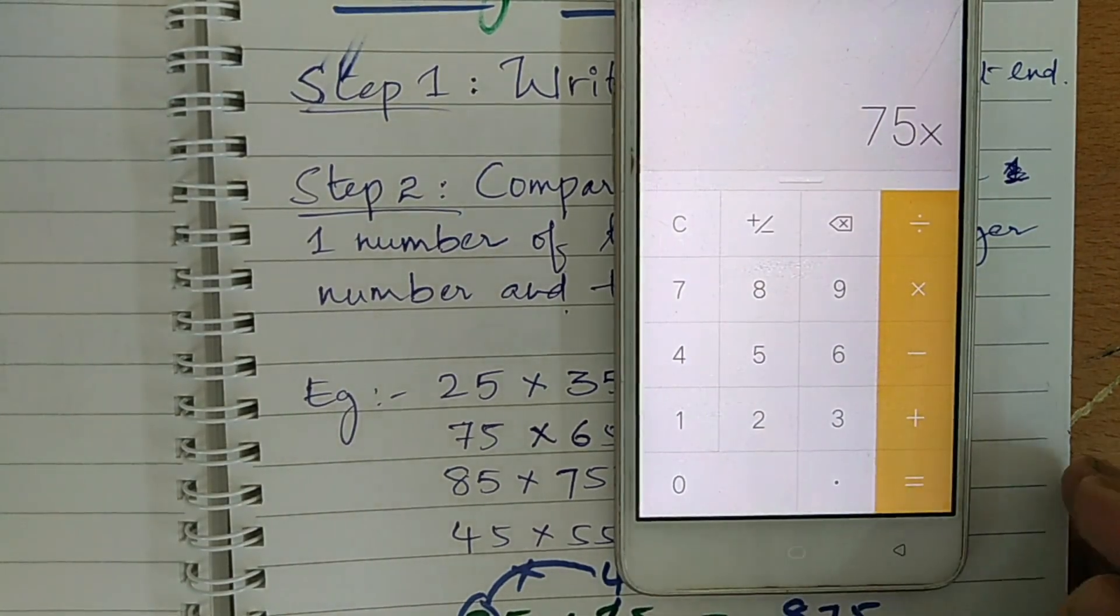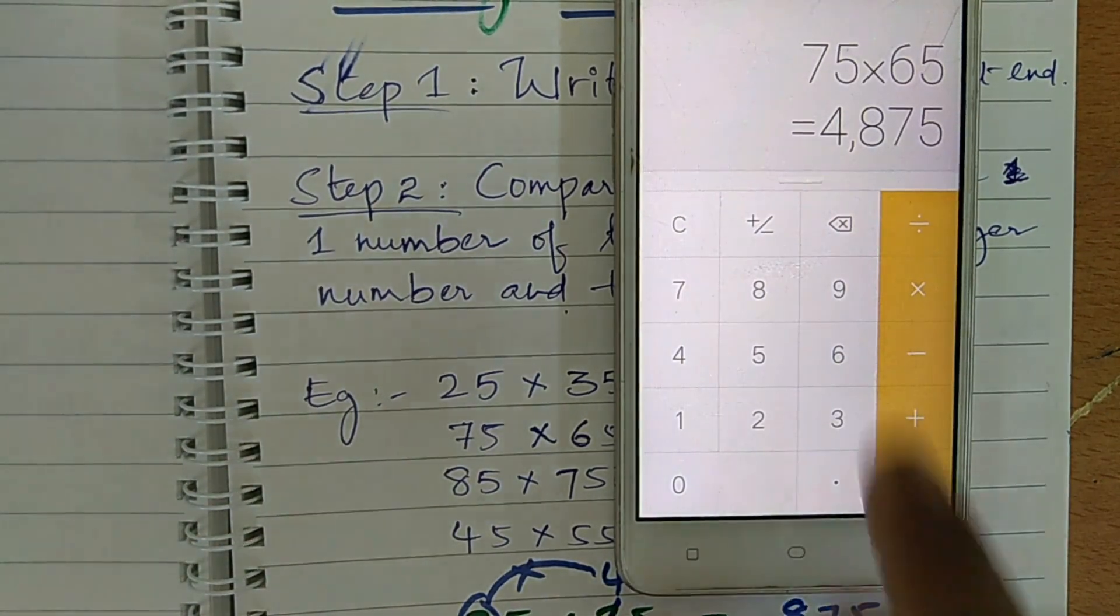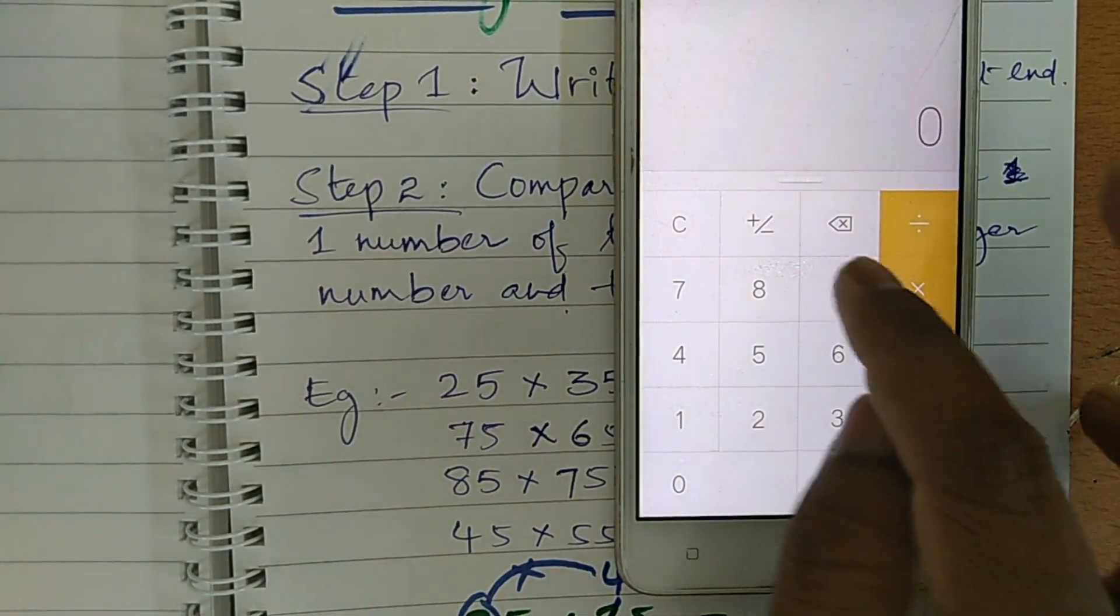Now, I will take the another one, 75 into 65. Again you can see here at the end, 75 is there. So, our answer is 4875 is correct.